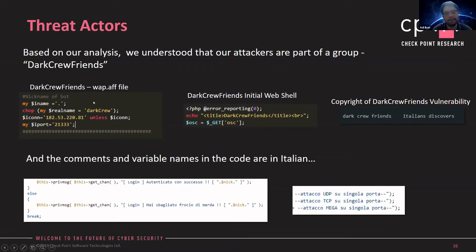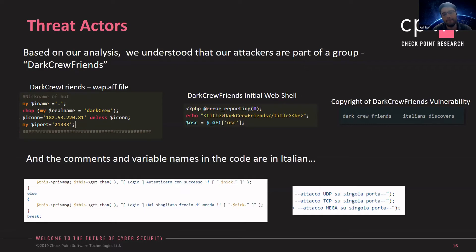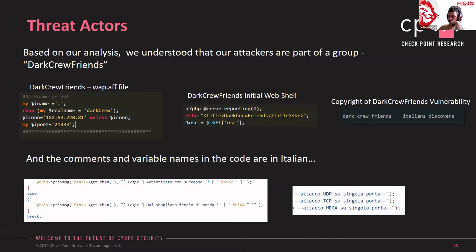In this specific campaign, we had a very straightforward indicator: 'DarkRoof Friends,' which we found in various places within the code — both in the web shell and in other files. This was a really strong indicator for us to investigate further. Through our deep web analysis, we managed to understand that DarkRoof Friends is part of a hackers group that has been active for years.